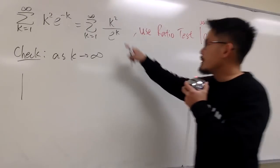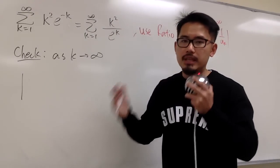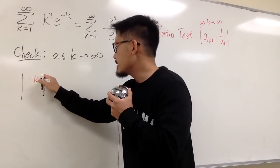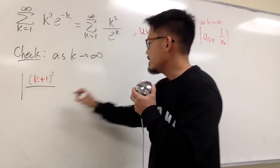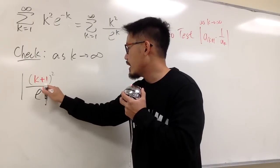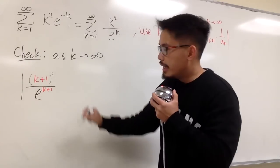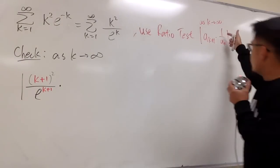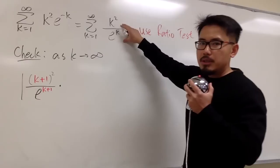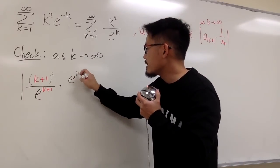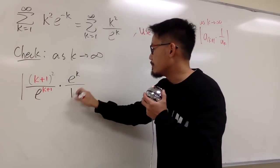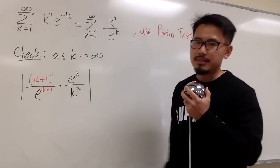First, a_k+1, I will replace the k here with k plus 1. So we look at that as (k+1) squared over e to the k+1 power. And then we multiply by the 1 over a_k, which is just the reciprocal of the original. So that means we put down e to the k on the top over k squared on the bottom, like this, inside of the absolute value.